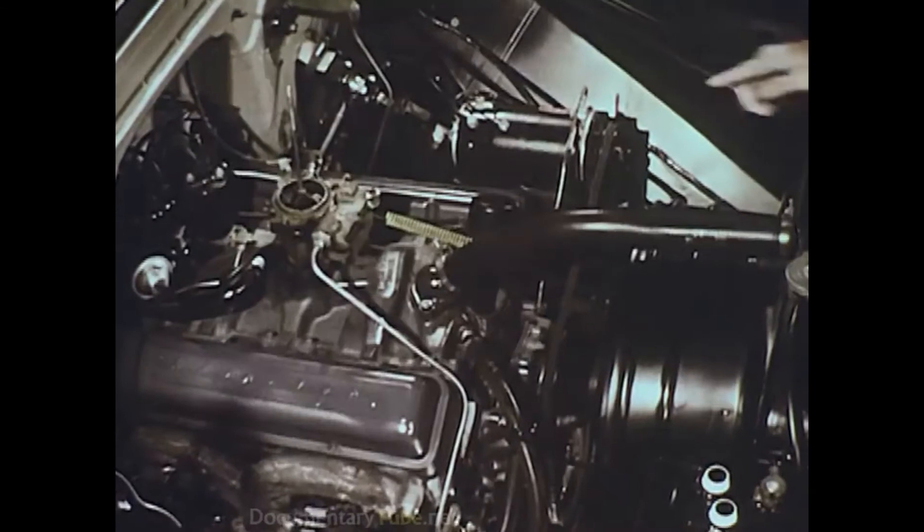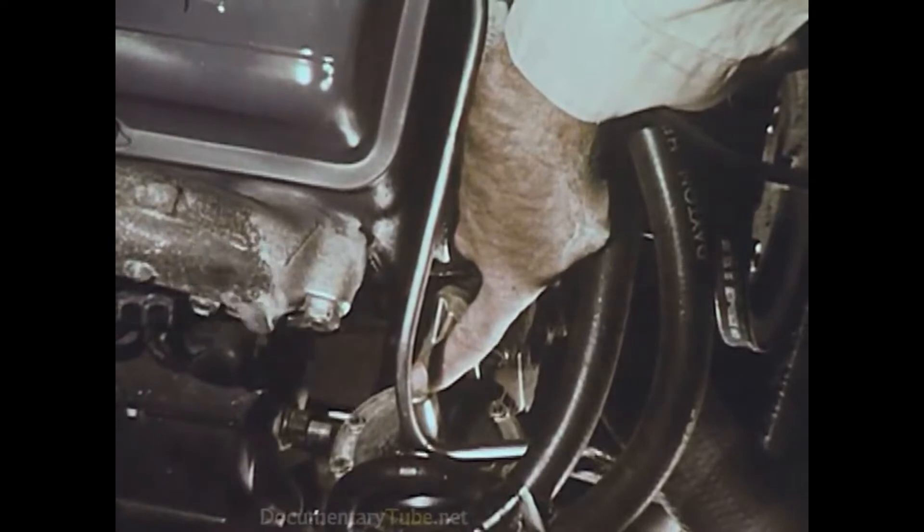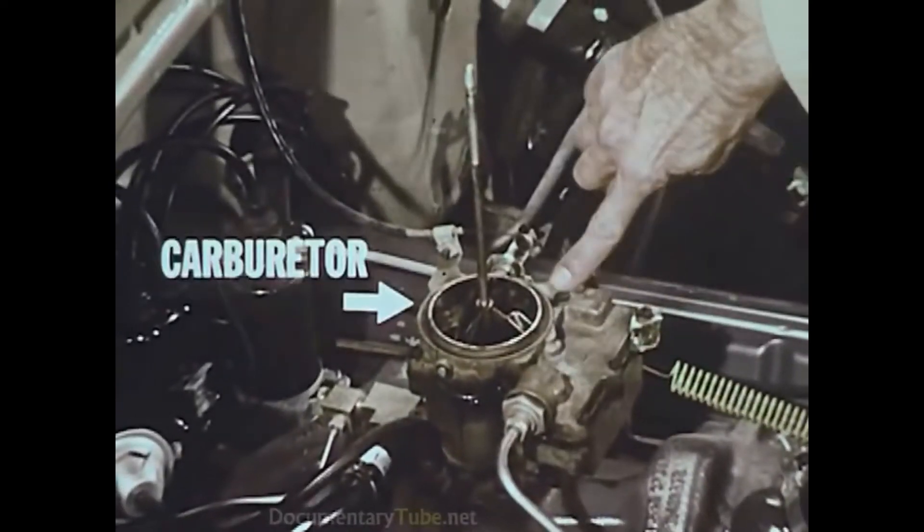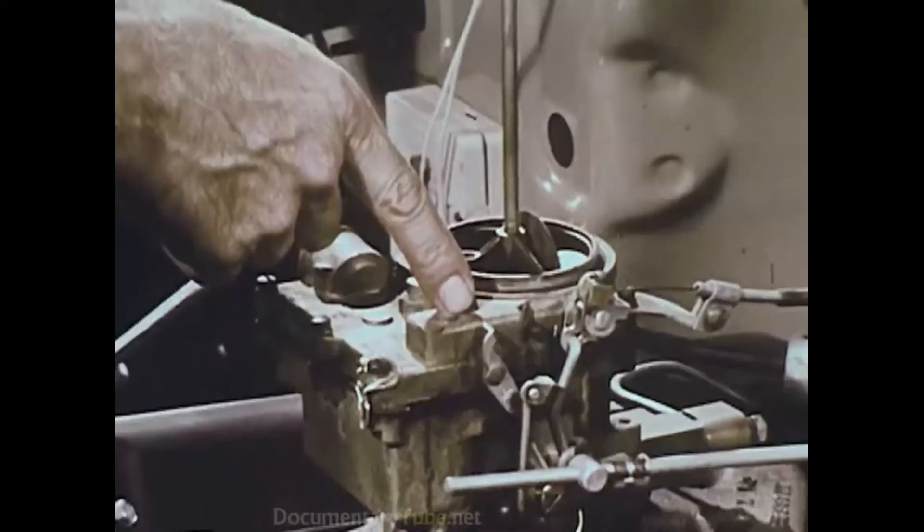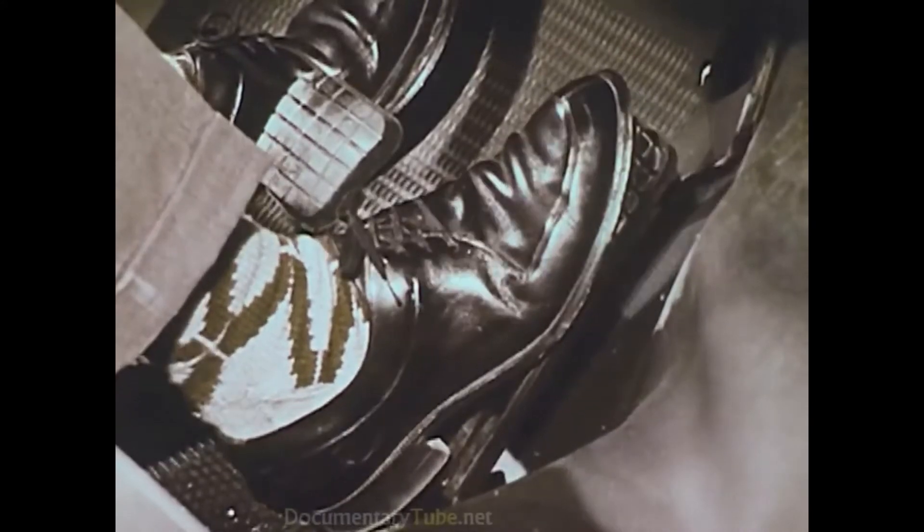Here on an actual engine are the counterparts of the fuel system just diagrammed. The fuel pump, the fuel line from pump to carburetor, and the carburetor itself with its air cleaner removed. Here is the linkage connecting the carburetor to the accelerator pedal.